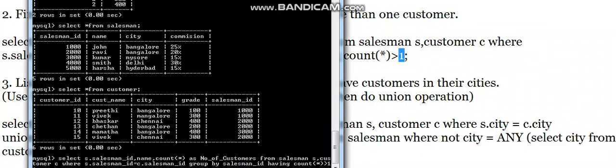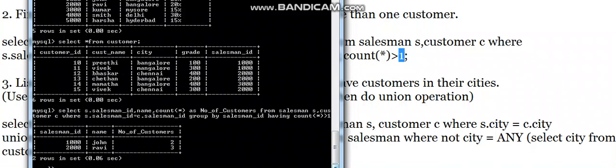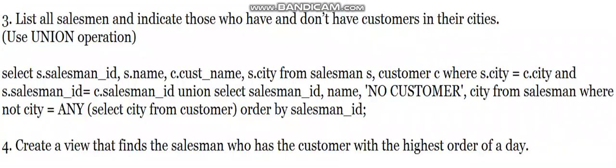Running the query, we can see salesman ID 1000 (John) has 2 customers and salesman ID 2000 (Ravi) has 3 customers. That is how the second query works.